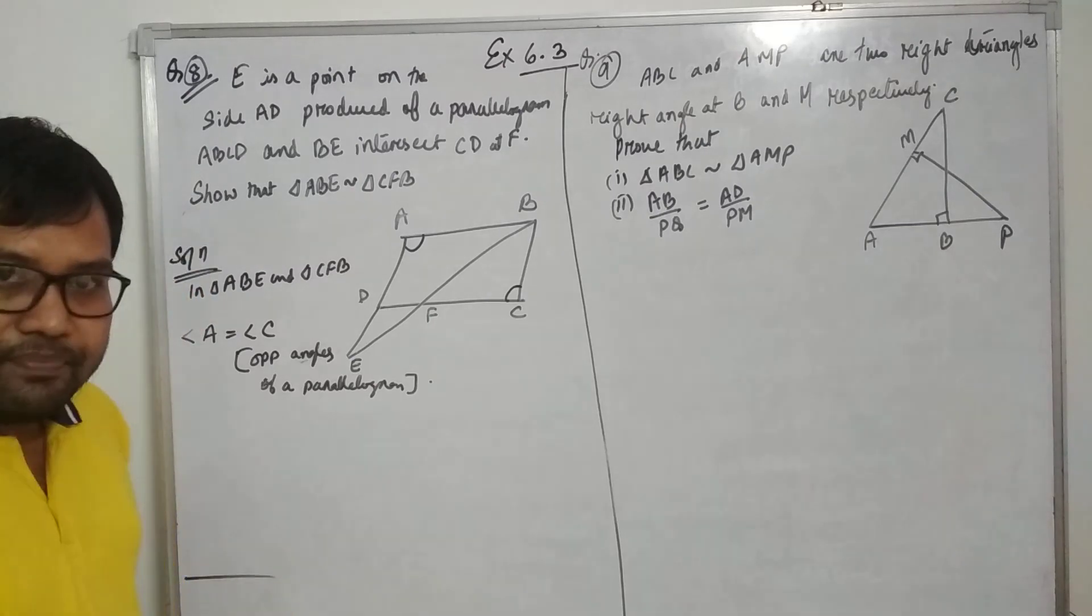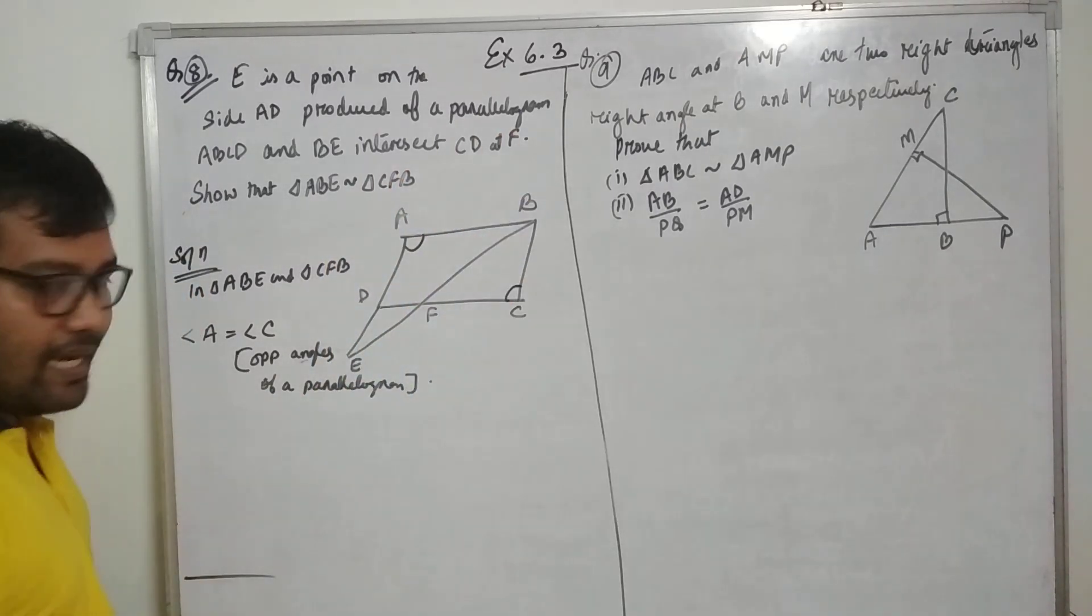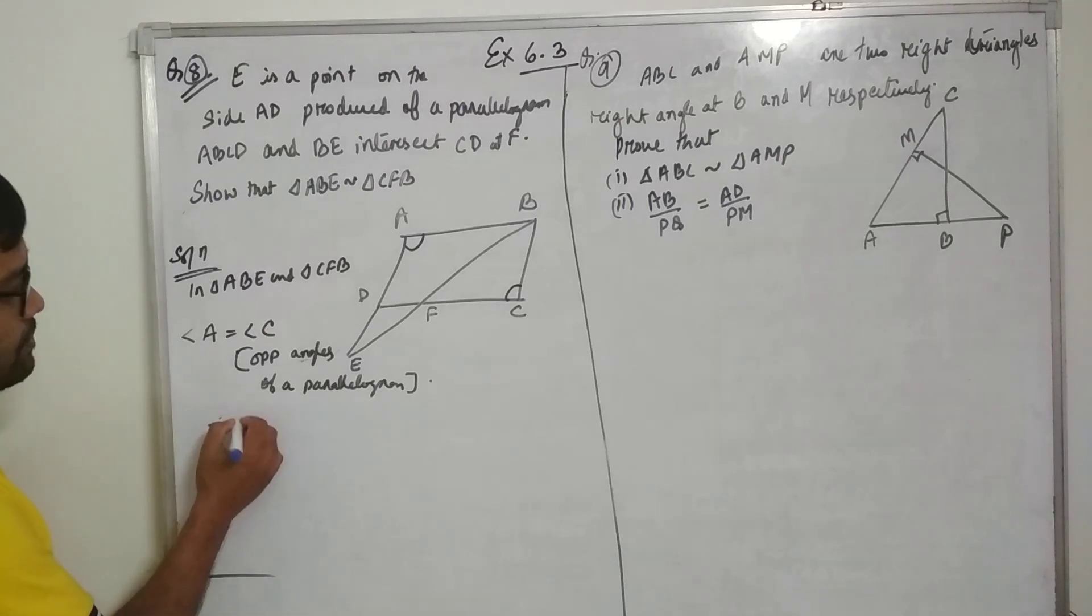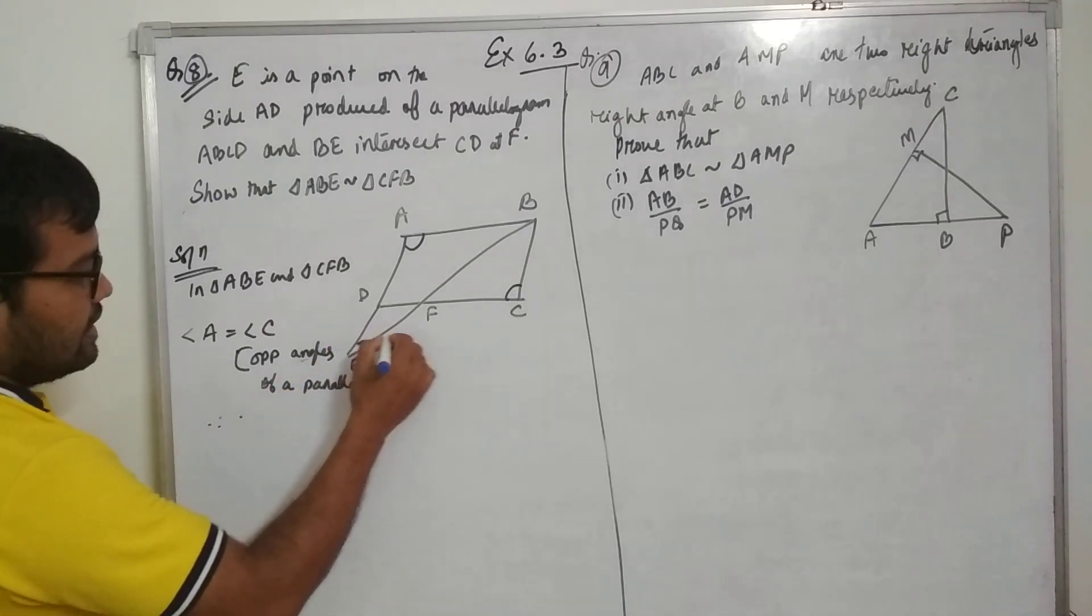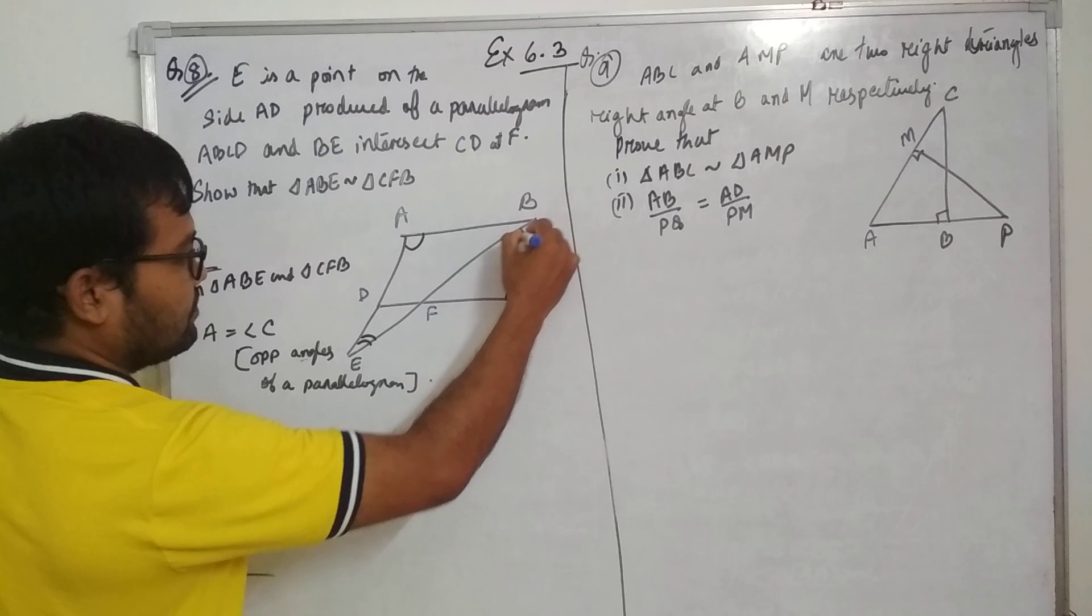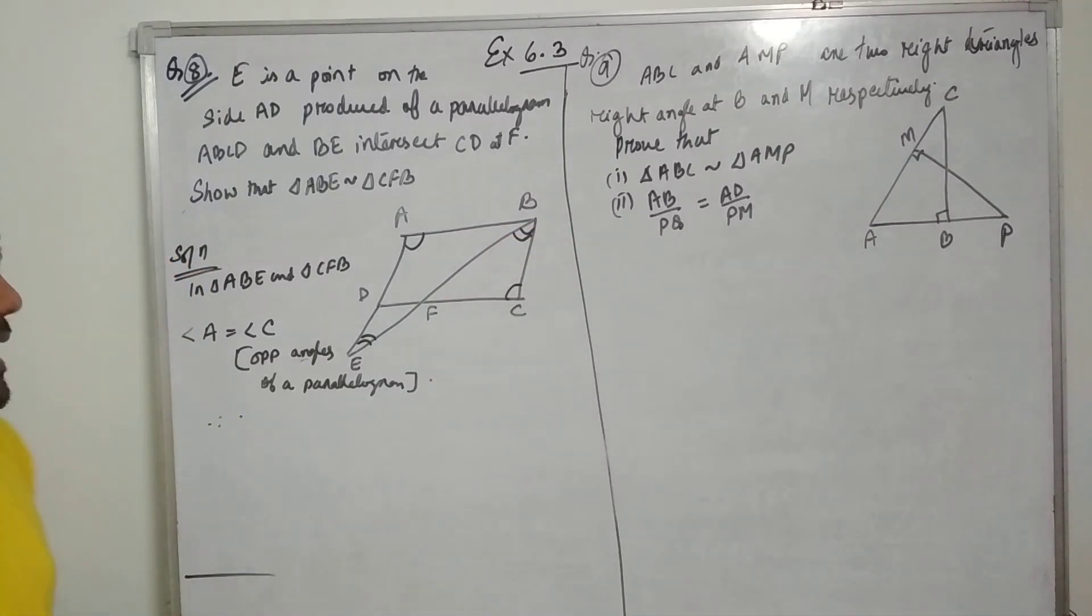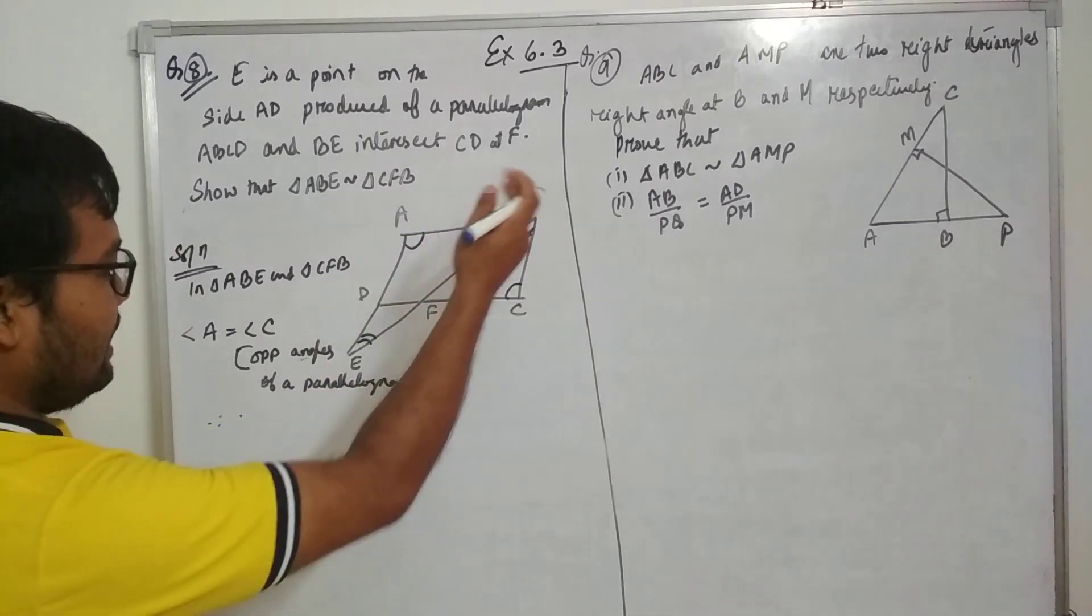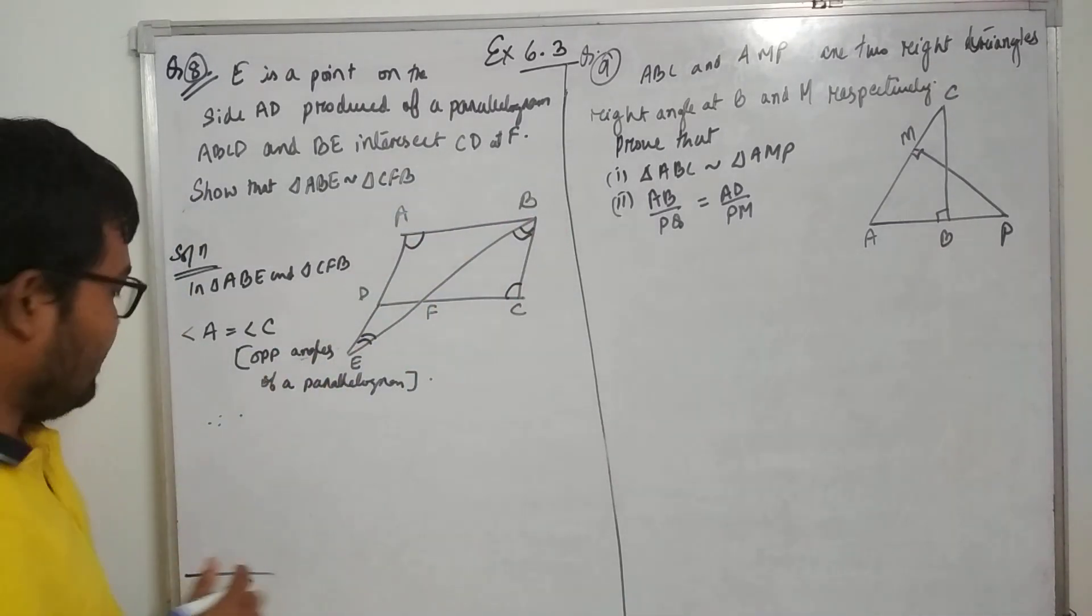In a parallelogram, opposite sides are parallel. Therefore, this angle and this angle, I could see this is an alternate angle because BE is the transversal. AE parallel to BC and BE is the transversal. Therefore angle AEB equal to angle CBF.